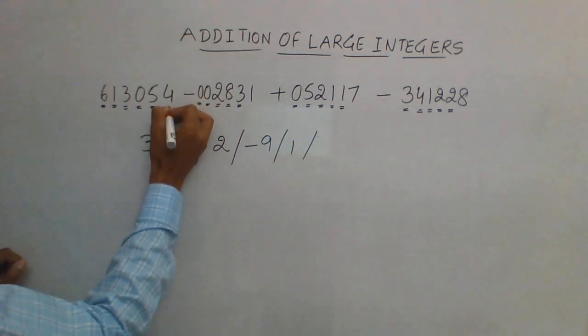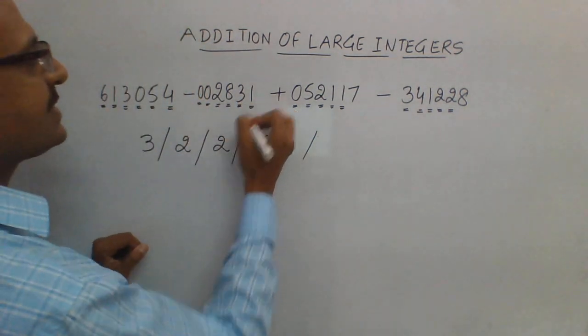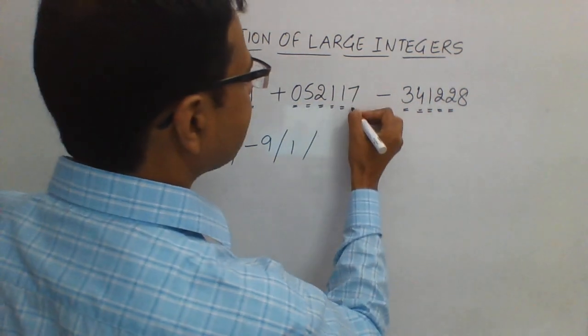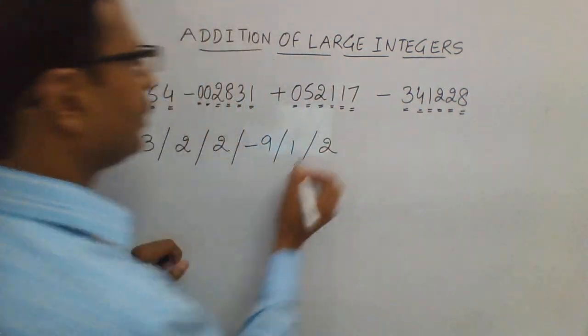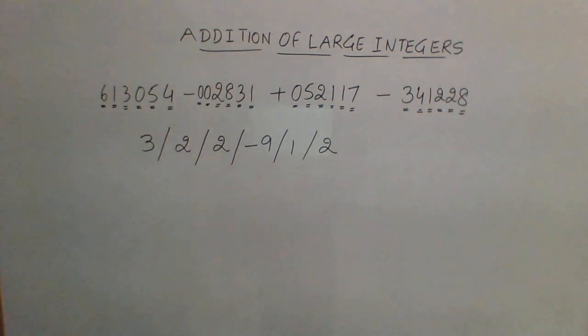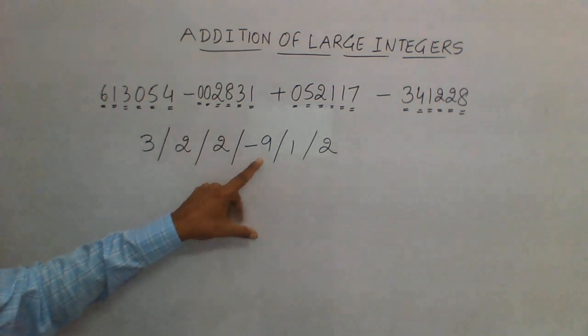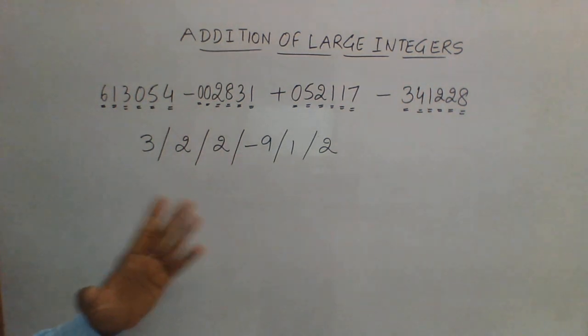Finally, 4 minus 1 is 3, 3 plus 7 is 10, 10 minus 8 is 2. Now you can see, the more positive numbers there are in this, the easier the calculation becomes, because the carry part can be done very easily.